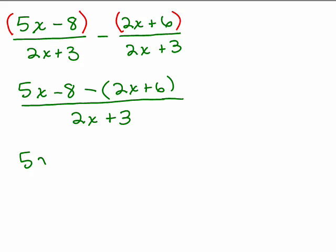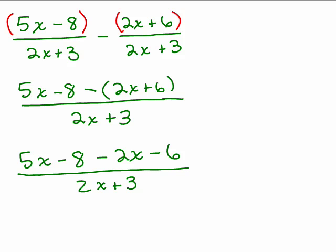Now if I distribute my minus sign, I'm going to have a minus 2x and a minus 6. Remember to remove the parentheses, which is distributing the minus sign, everything inside the parentheses will have opposite signs. So instead of plus 2x and plus 6, you'll have a minus 2x and minus 6. And that's still all over 2x plus 3. In the numerator,